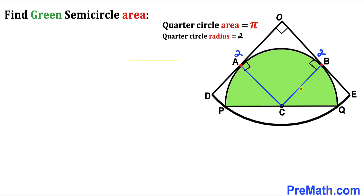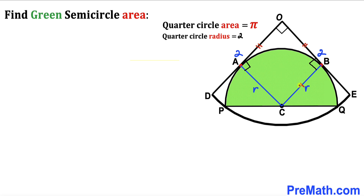We can see that AC is the radius of the green semicircle — let's label it lowercase r. Likewise, the other segment is also radius r of the green semicircle. Since all these angles are 90 degrees each, quadrilateral ACBO is a square, meaning all side lengths are equal. So each side is lowercase r.